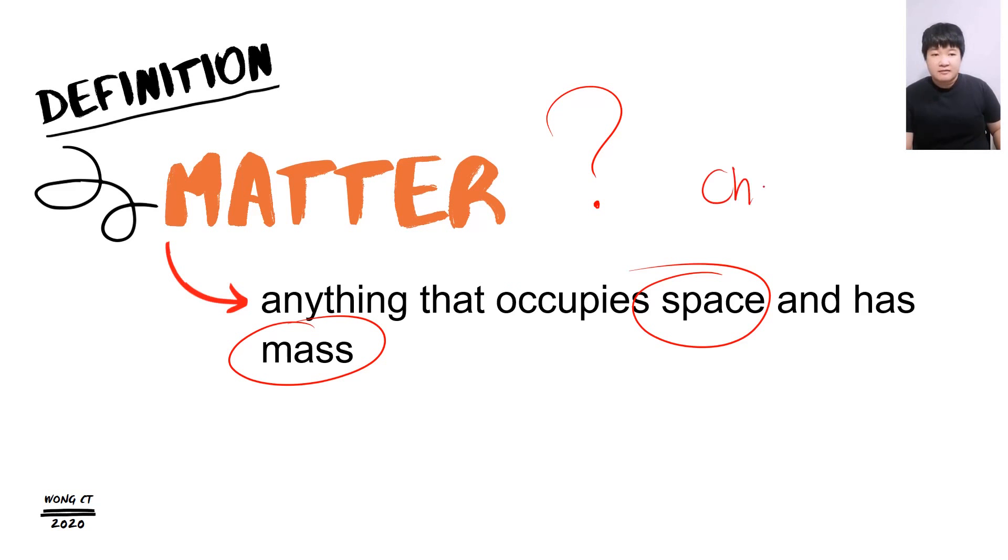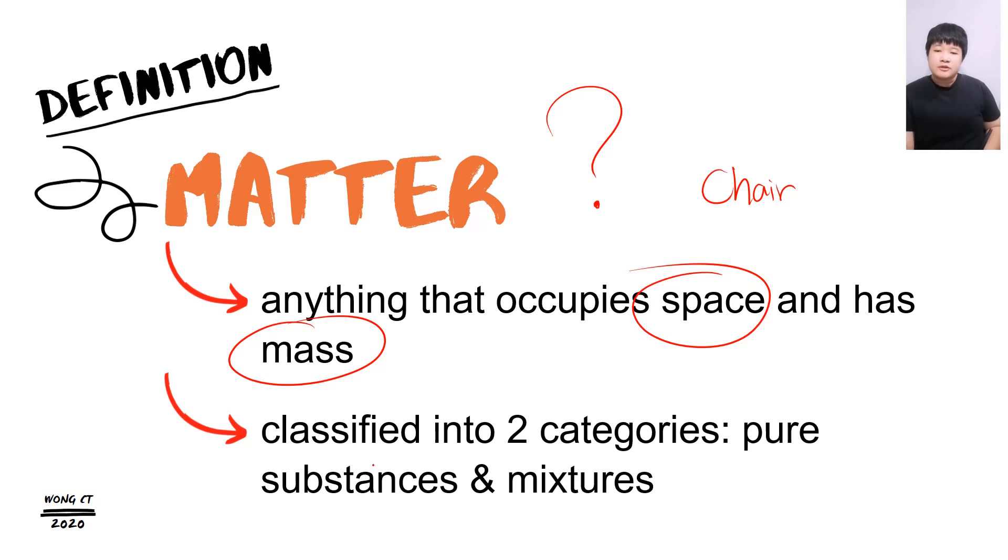Even a chair is a matter. In chemistry, matter can be classified into two categories, pure substance and mixtures.